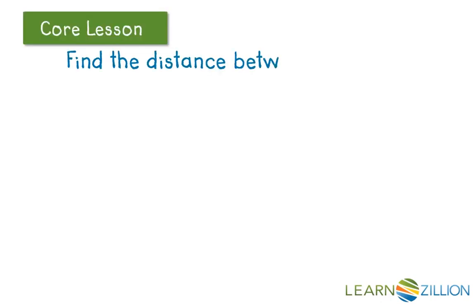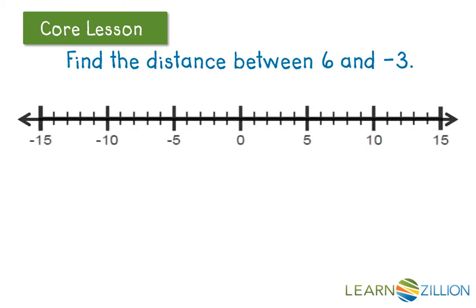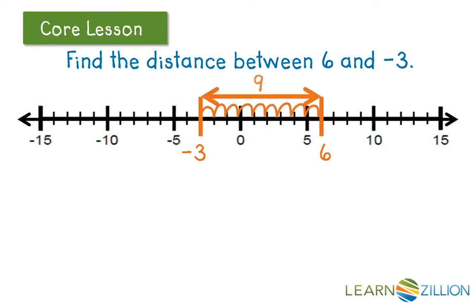Let's try a final example of positive 6 and negative 3. If I want to find the distance between them, I can count up the spaces. Again, I get positive 9. Notice that 6 minus negative 3 is positive 9, and negative 3 minus 6 is negative 9. So their differences are not always positive, but the distance between them is.